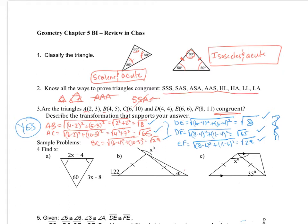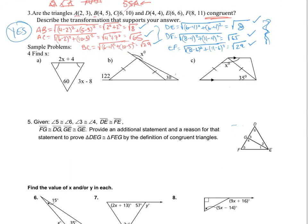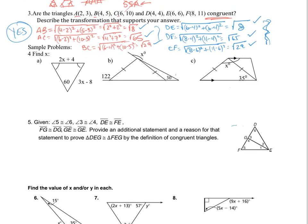Let's move on to number 4, where we have to find X. We need to see if there are any congruence relationships with the triangles. In part A, if these two angles are congruent and that's 60 degrees, then each of these has to be 60 as well — we end up with an equilateral triangle. That means all sides are congruent, so 2X plus 4 equals 3X minus 8. Solving for X gives X equals 12.